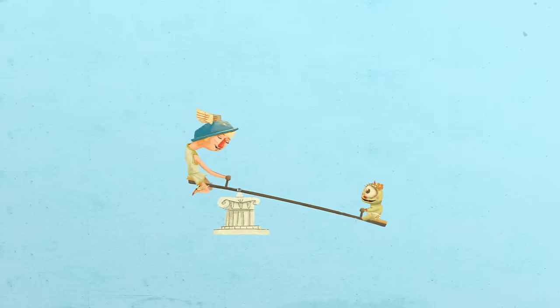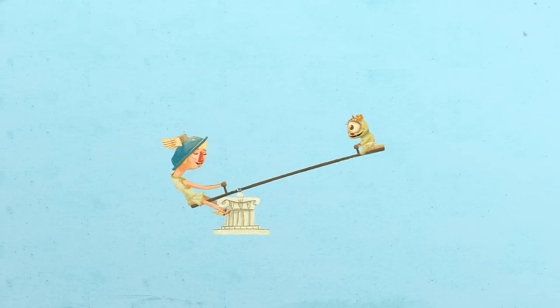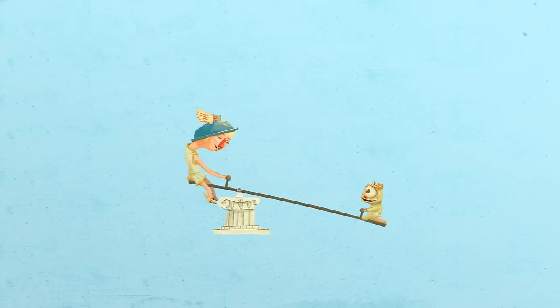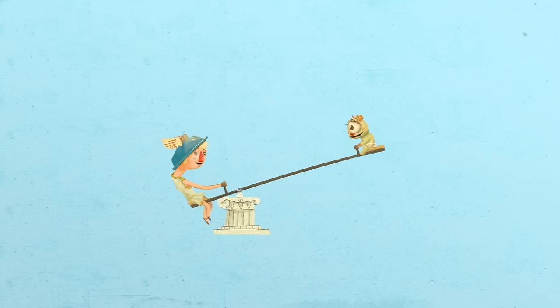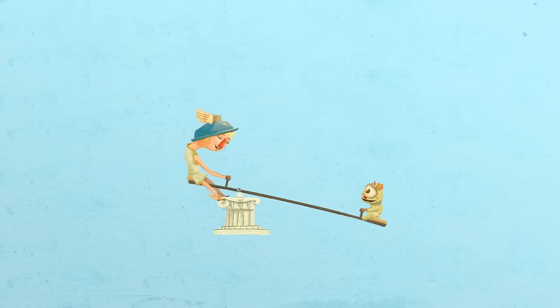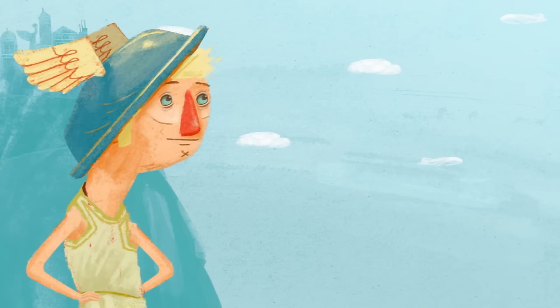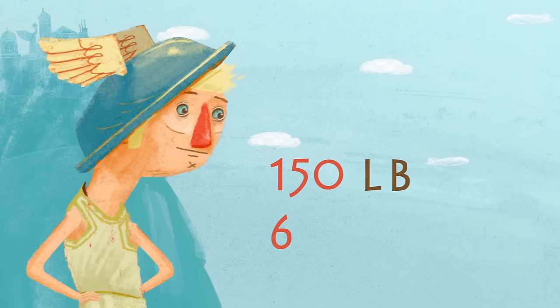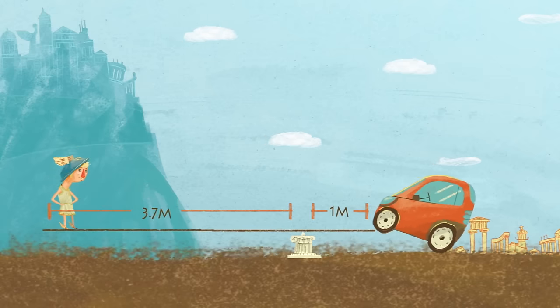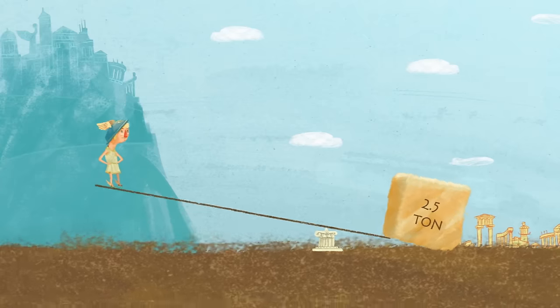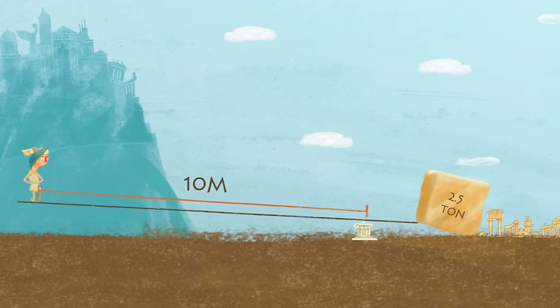Seesaws may be fun, but the implications and possible uses of levers get much more impressive than that. With a big enough lever, you can lift some pretty heavy things. A person weighing 150 pounds, or 68 kilograms, could use a lever just 3.7 meters long to balance a smart car, or a 10-meter lever to lift a 2.5-ton stone block, like the ones used to build the pyramids.